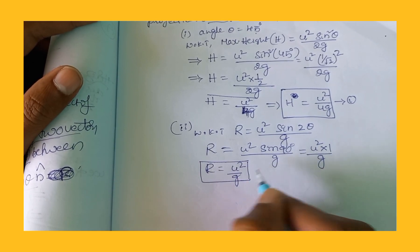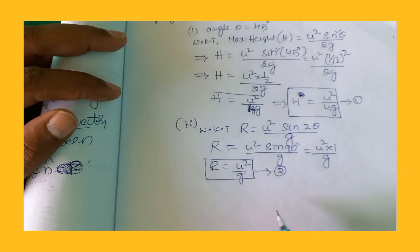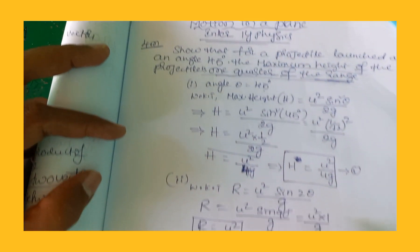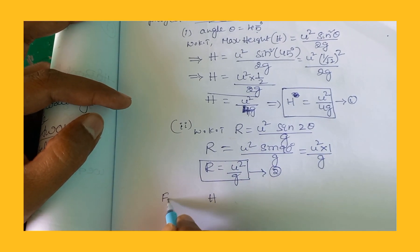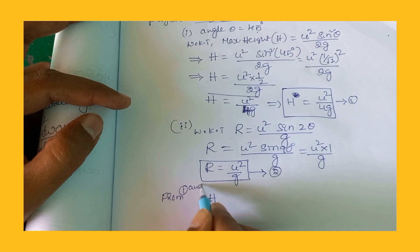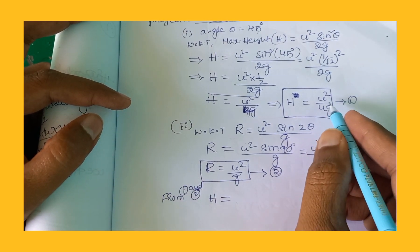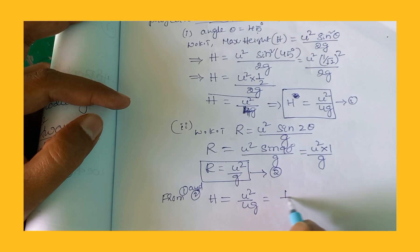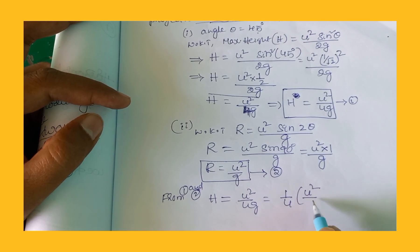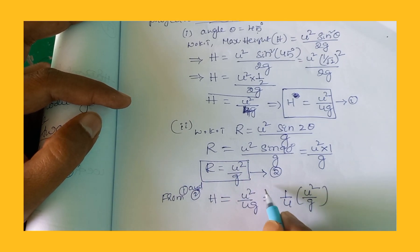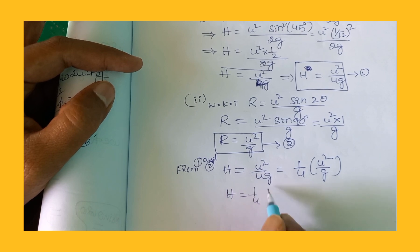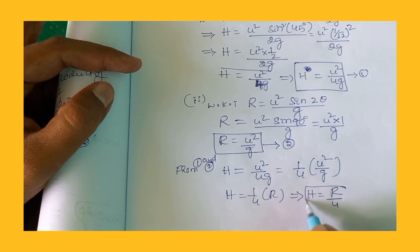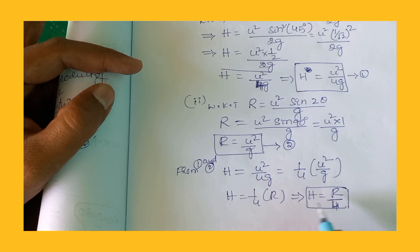Now we want to show that maximum height is one quarter of the range. From equation 1 and 2: H equals u squared by 4g, which can be written as 1 by 4 times u squared by g. From equation 2, u squared by g equals R, so this implies H equals 1 by 4 times R.